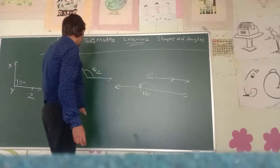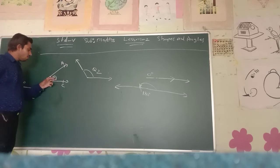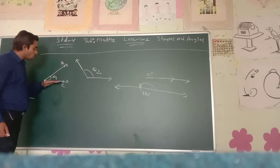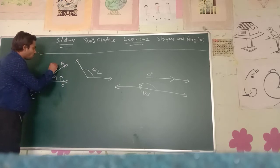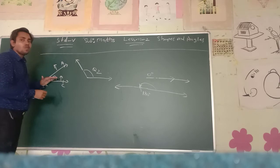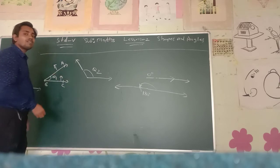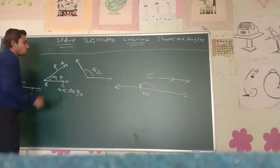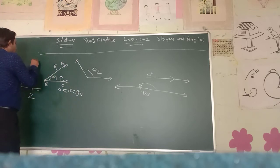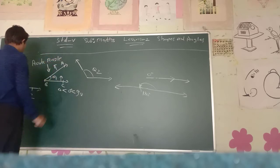Now come to the next one: this is an acute angle. When the angle is less than 90 degrees but more than zero degrees — when this ray is moving away from that ray — it is responsible to form an acute angle. So when the angle is more than zero but less than 90 degrees, it is called an acute angle.